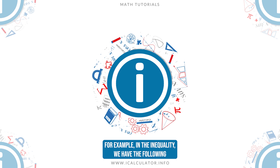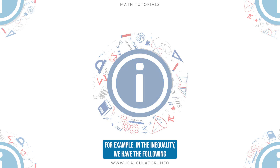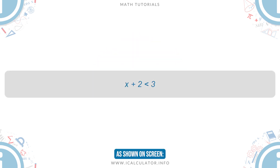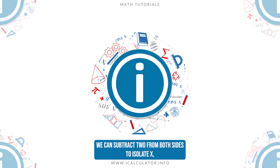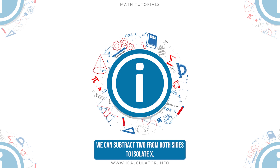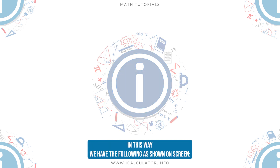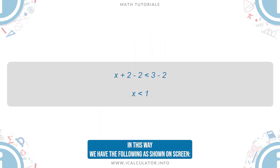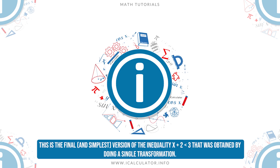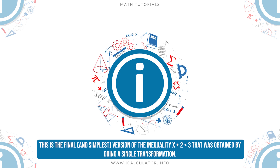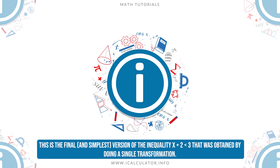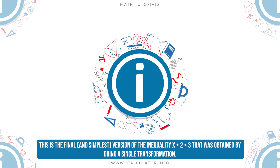For example, in the inequality x plus 2 less than 3, we can subtract 2 from both sides to isolate x. In this way, we obtain the final and simplest version of the inequality x plus 2 less than 3, which was obtained by doing a single transformation.